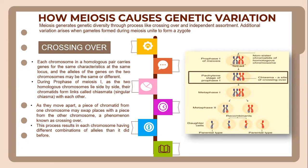Meiosis generates genetic diversity through processes like crossing over and independent assortment. Additionally, variation arises when gametes formed during meiosis unite to form a zygote. Each chromosome in a homologous pair carries genes for the same characteristic at the same locus, and the alleles of the genes on the two chromosomes may be the same or different.